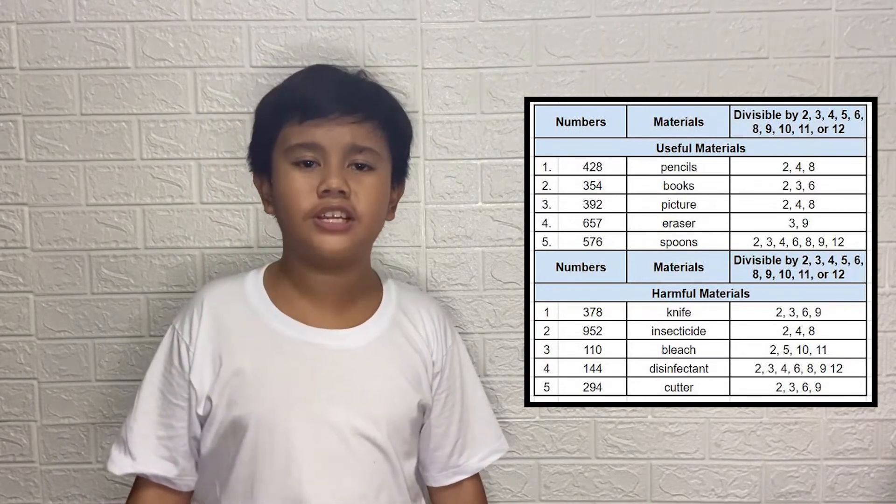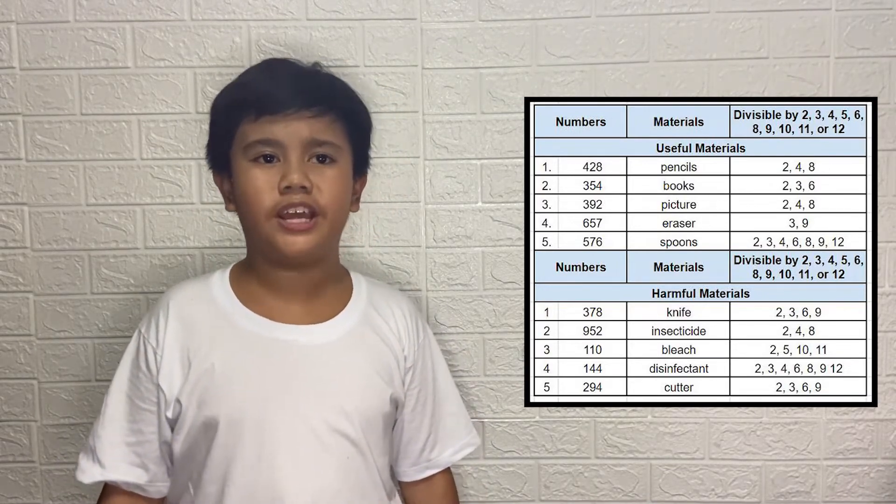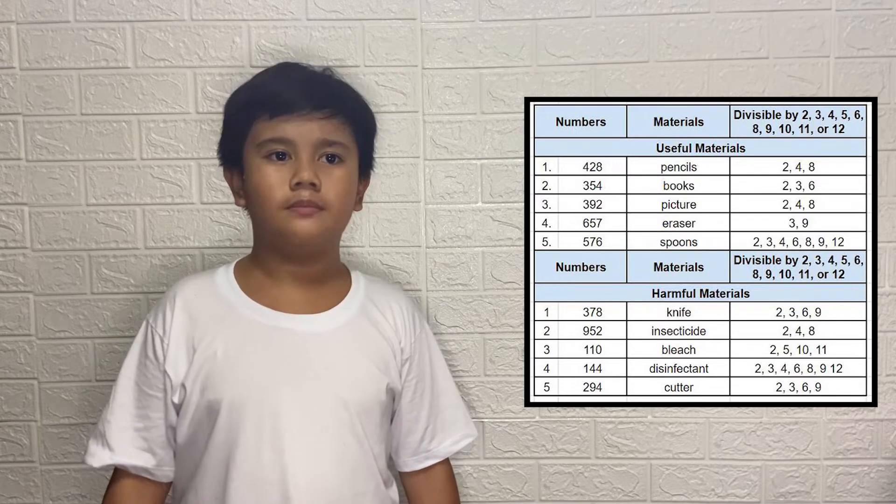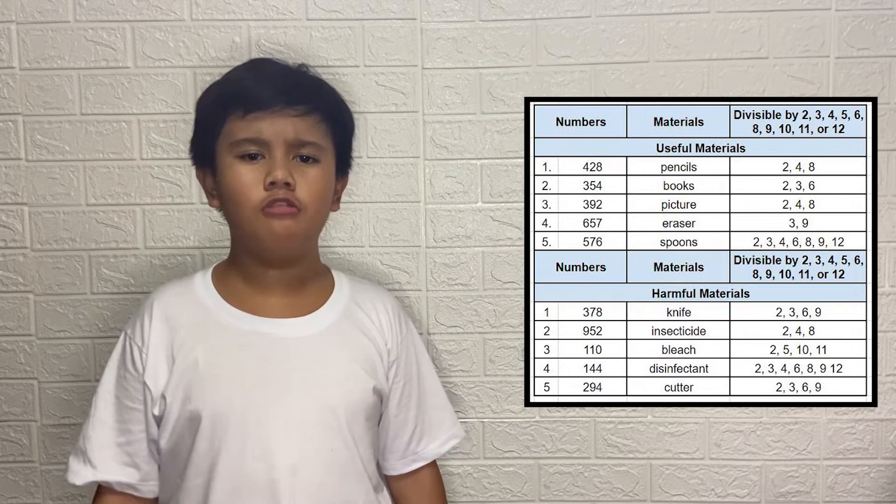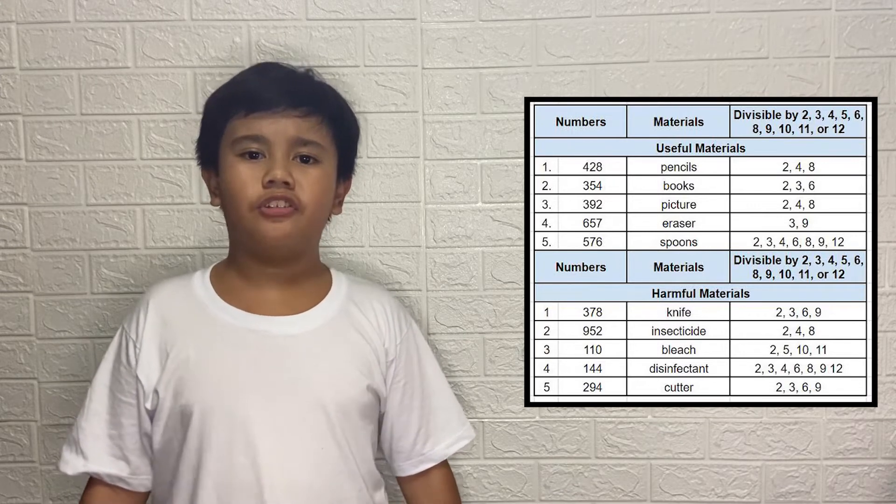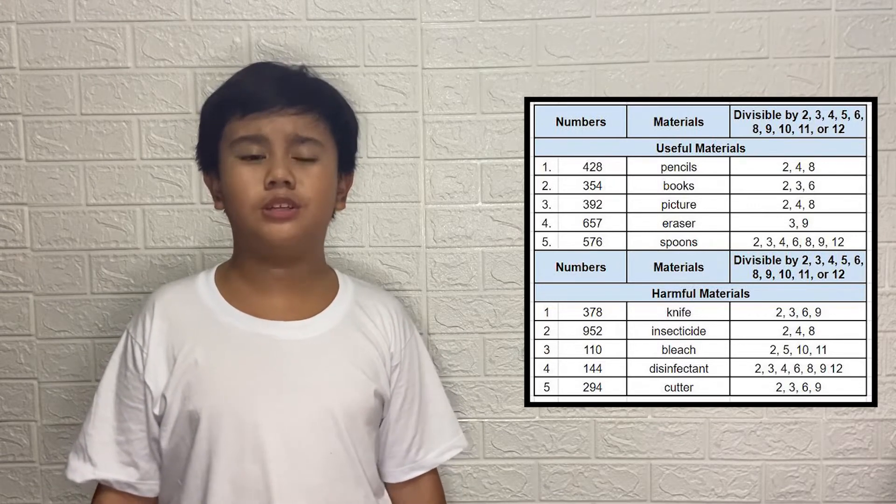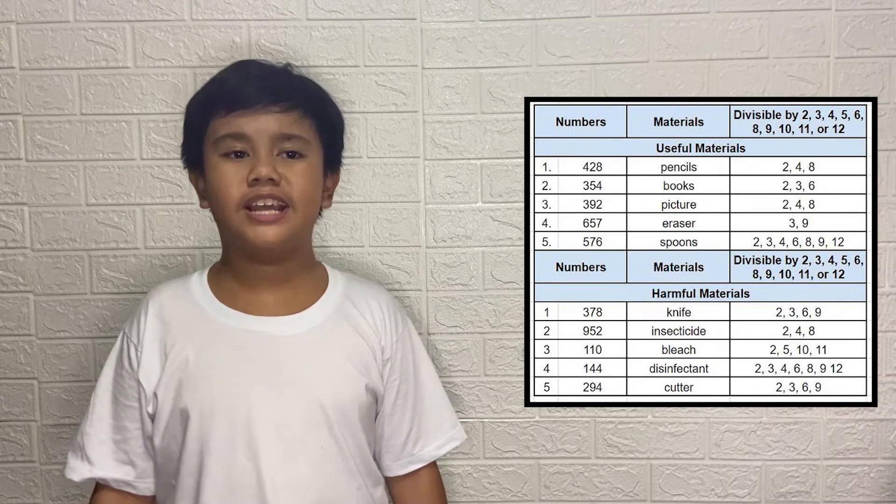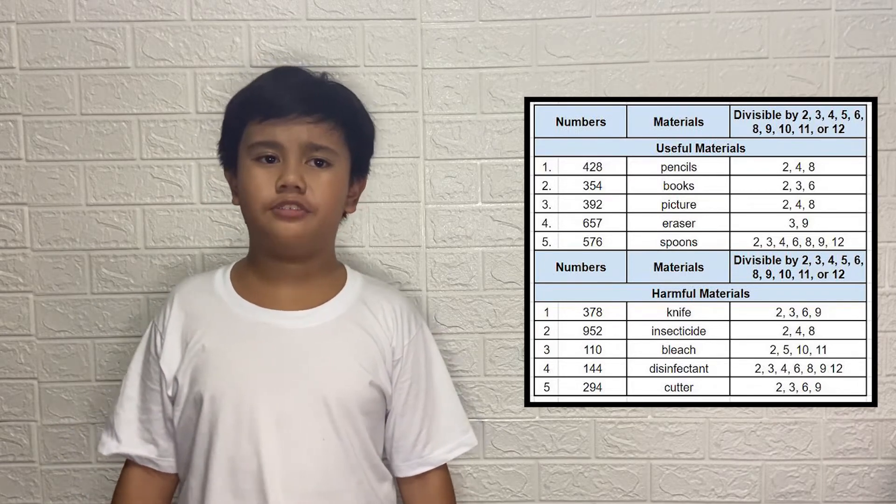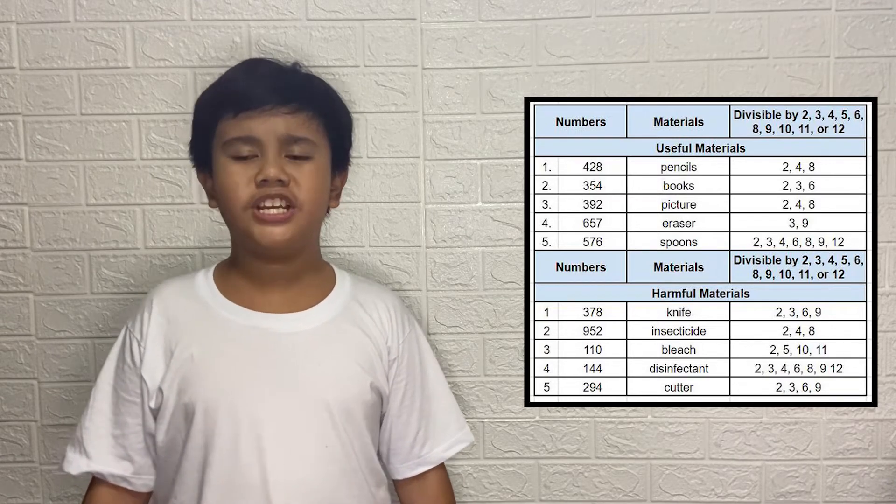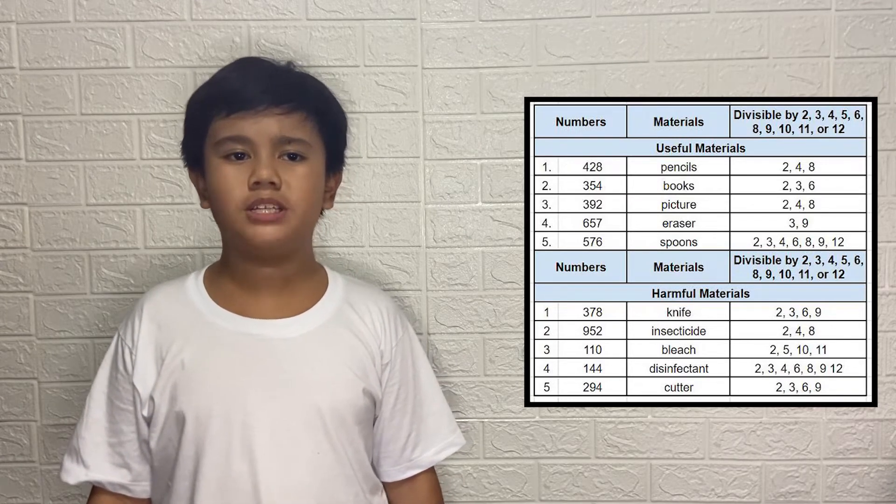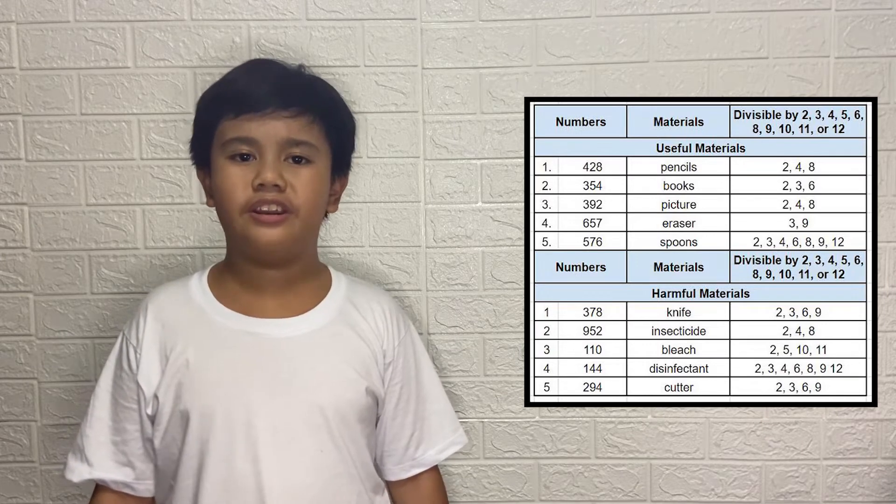For the first and third column, I listed the following numbers. 428 is divisible by 2, 4, and 8. 354 is divisible by 2, 3, and 6. 392 is divisible by 2, 4, and 8. 657 is divisible by 3 and 9.